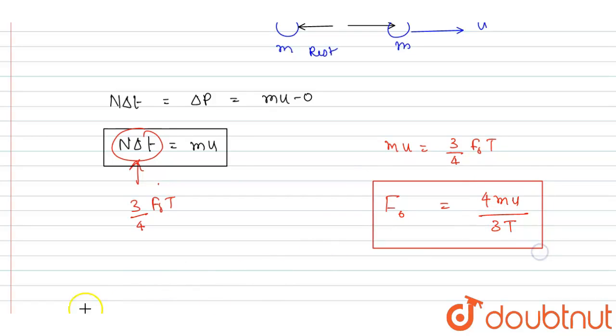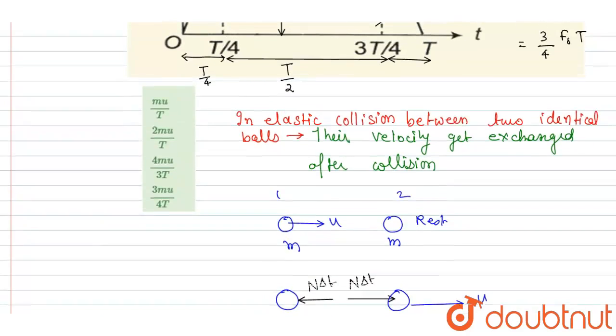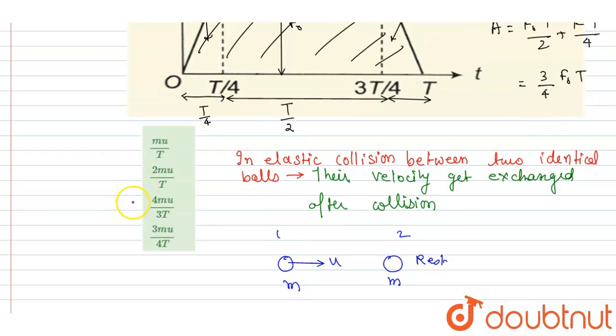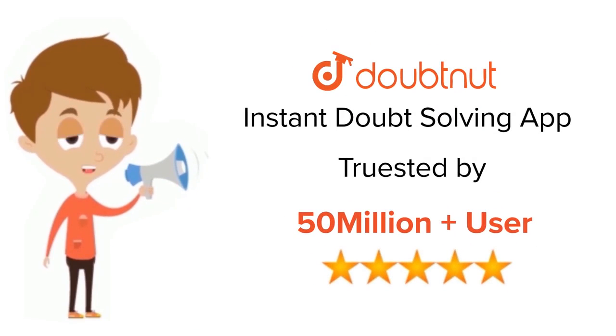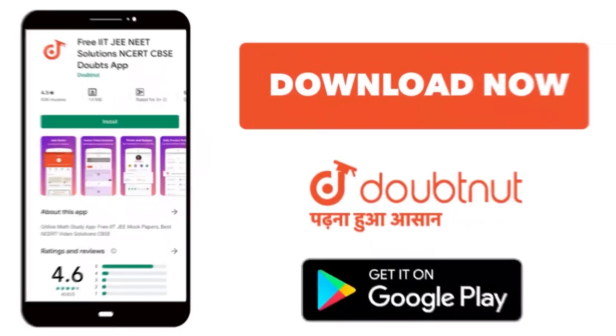Now you can check for the option. The f naught is equal to 4 mu by 3 t, so 4 mu by 3 t is C. C is the correct one. Thank you. For class 6 to 12, IIT-JEE and NEET level, trusted by more than 5 crore students, download Doubtnut app today.